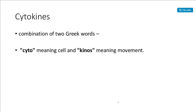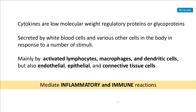The word cytokine comes from two Greek words: cyto, meaning cell, and kinose, meaning movement. So cytokines means movement of cells — a substance moving out of cells. Cytokines are low molecular weight regulatory proteins or glycoproteins secreted by white blood cells and various other cells in the body in response to a number of stimuli. Cytokines are released mainly by activated lymphocytes.